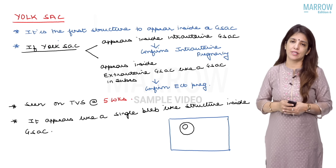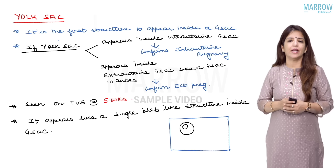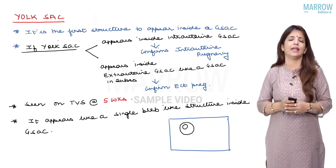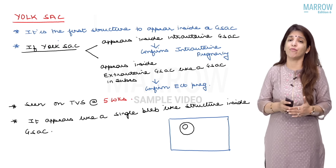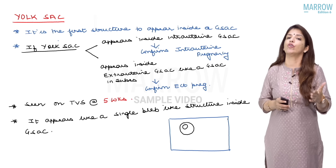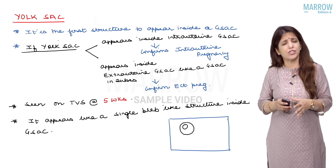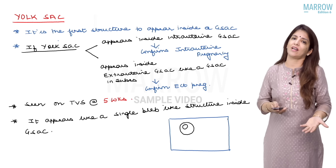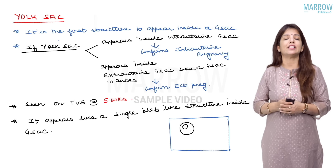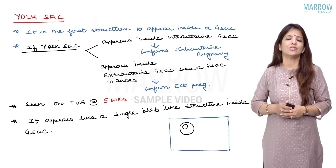The next structure which appears is a yolk sac. The yolk sac is the first structure to appear inside a gestational sac. If a yolk sac appears inside an intrauterine sac, it confirms intrauterine pregnancy; if a yolk sac appears inside a gestational sac in the tubes, it confirms ectopic pregnancy. A yolk sac can be seen on transvaginal sonography at five weeks and appears like a single bleb inside the gestational sac.